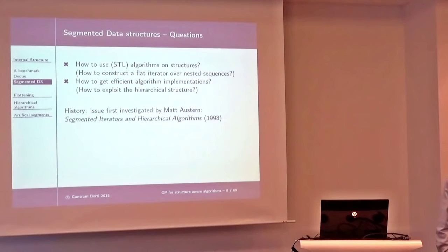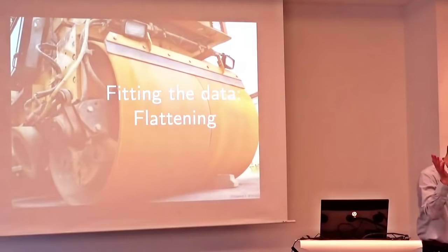A bit of history is also in order. This issue was first investigated to my knowledge by Matt Austern in a paper published in 1989. Since then it doesn't seem to have deserved the attention I think it merits. Matt Austern mentions a performance difference of about 20%, which was obviously before the era of vectorization units. So, this is the STL approach: making flat what isn't. Everything must look flat, otherwise you can't treat it with STL algorithms.